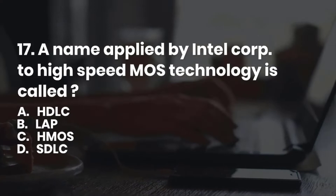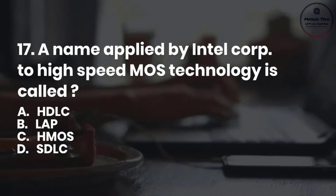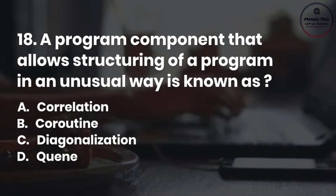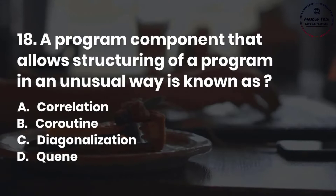Number 18. A program component that allows structuring of a program in an unusual way is known as: A. Correlation. B. Coroutine. C. Diagonalization. D. Queue. Correct answer is B.